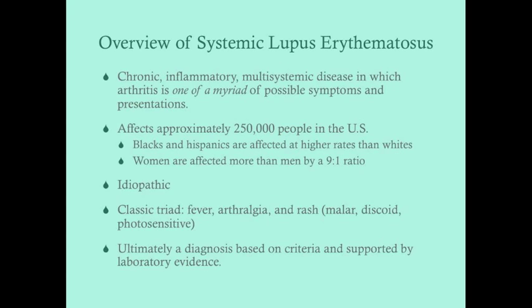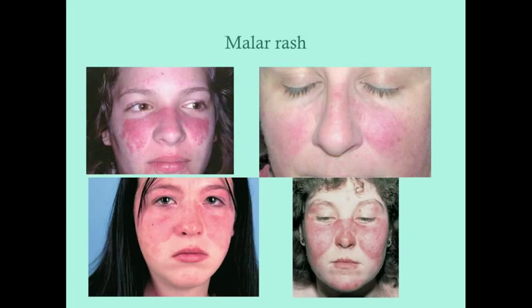Lupus is ultimately diagnosed based on a set of criteria approved by the American College of Rheumatology, supported by laboratory evidence. There is no single way to diagnose it — you can't get a single lab exam, x-ray, or CT. This is a diagnosis based on criteria, kind of like some psychiatric disorders, but this is clearly not a psychiatric disorder.